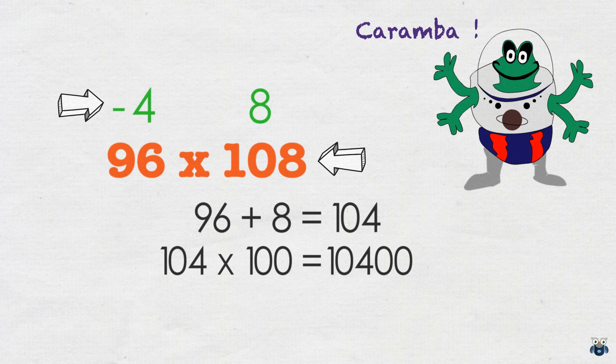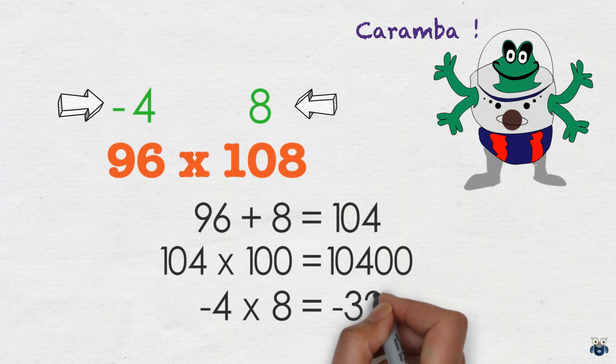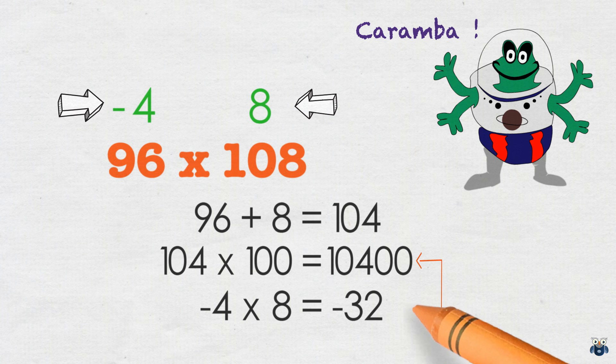Multiplying the result with our base we get 10400. We then multiply the deficits. Minus 4 times 8 is minus 32. Finally we add 10400 and minus 32 to get 10368 our final answer.